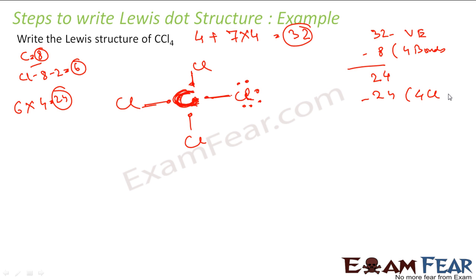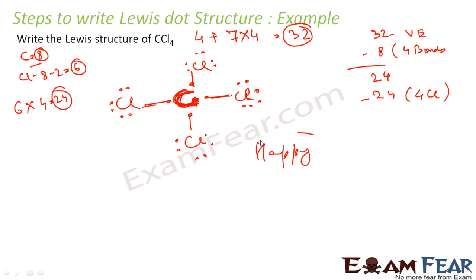So 24 electrons we add to the 4 chlorines — 6 here, 6 here, 6 here, and 6 here. Now each of the atoms in this molecule, both carbon and chlorine atoms, are happy. Since everybody is happy, the structure is stable. The goal is to make everybody happy — all the atoms are happy, that's all we want.